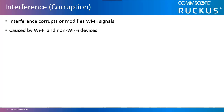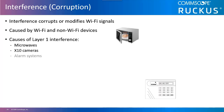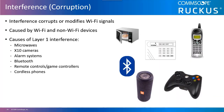Interference occurs at both Layer 1 and Layer 2. Layer 1 interference comes from many common non-802.11 sources, such as microwaves, X10 cameras, alarm systems, Bluetooth, remote control devices, cordless phones, and even weather radar. This type of interference disrupts the physical carrier sense of Wi-Fi communications, effectively disrupting the medium itself.